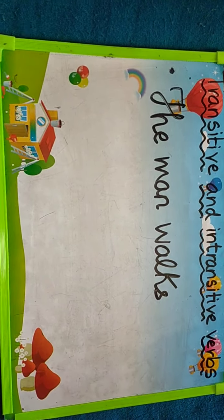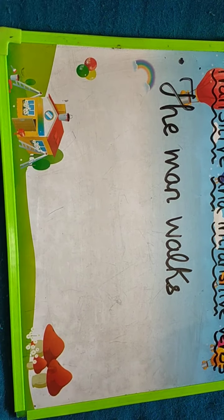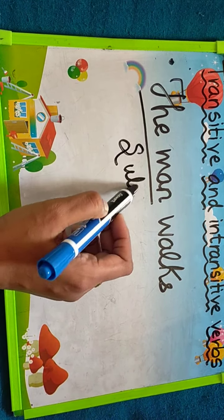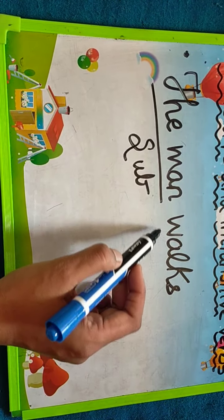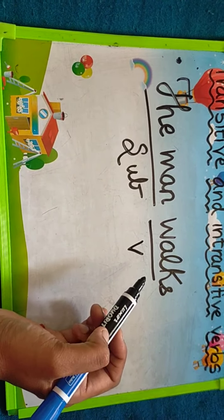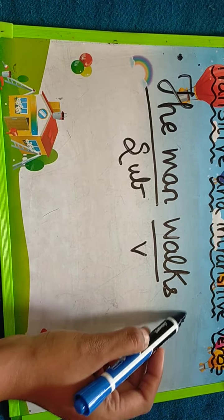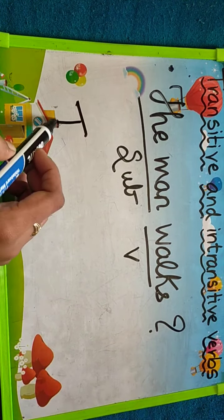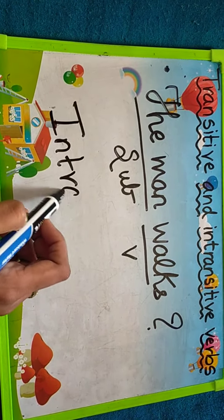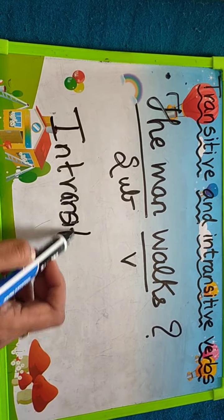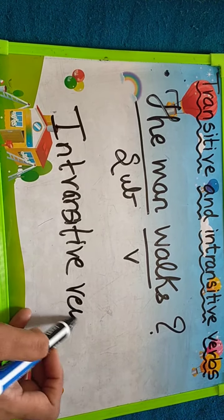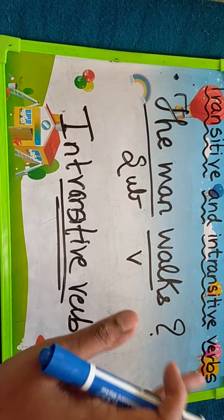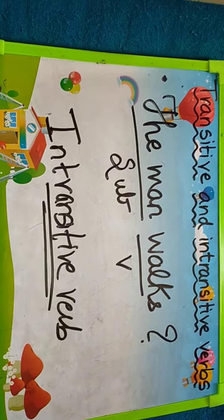Now look at the next sentence: 'The man walks.' Here, 'the man' is the subject and 'walks' is the verb. But where does he walk? Is there any object given? No. So here the verb will be an intransitive verb, because the object is not mentioned. When there is no object, the verb will be an intransitive verb.